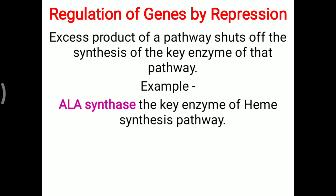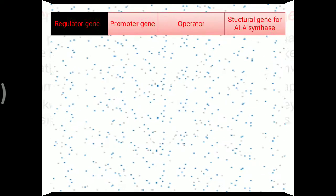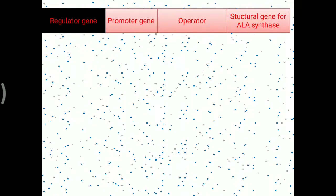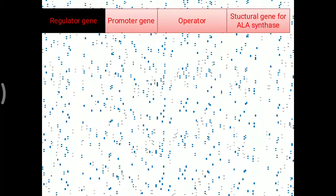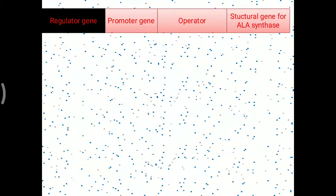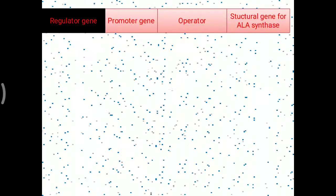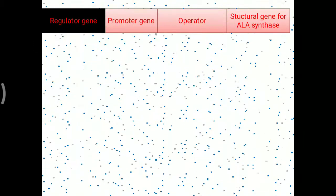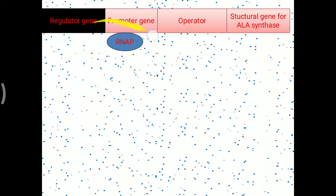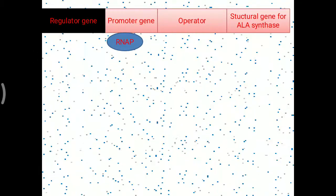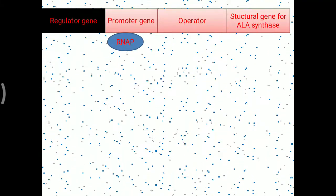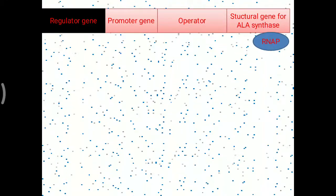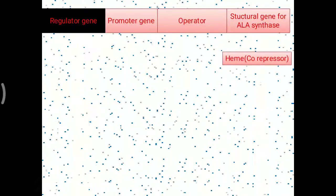ALA synthase is produced with the help of the ALA synthase-producing gene. There is a structural gene for ALA synthase, and before the structural gene there is a regulatory gene region, a promoter gene, and an operator site for ALA synthase. RNA polymerase attaches over the promoter area of ALA synthase, and once attached it moves on to the structural gene and heme is synthesized.